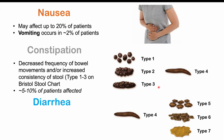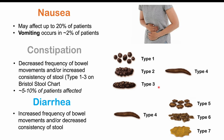Diarrhea is also another side effect. This is where there's an increased frequency of bowel movements and/or decreased consistency of stool — types five, six, and seven on the Bristol stool chart. This affects roughly five to seven percent of patients. Patients can have either constipation, diarrhea, or alternating between both.